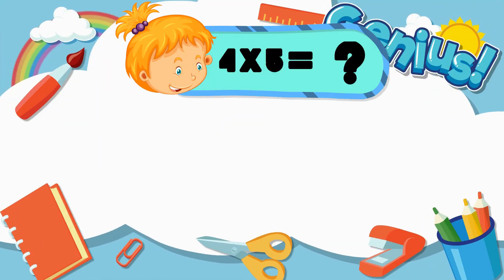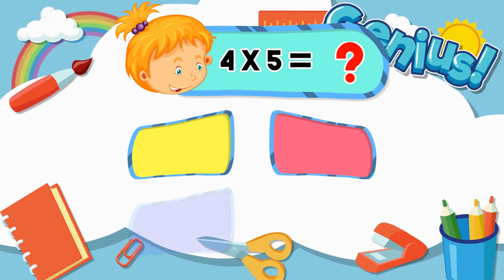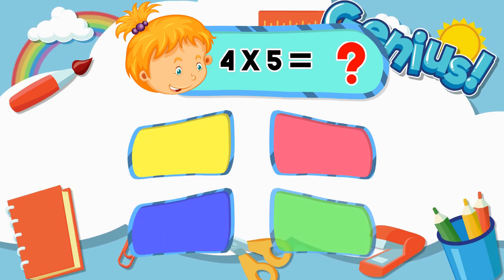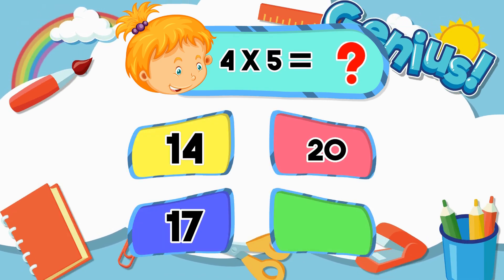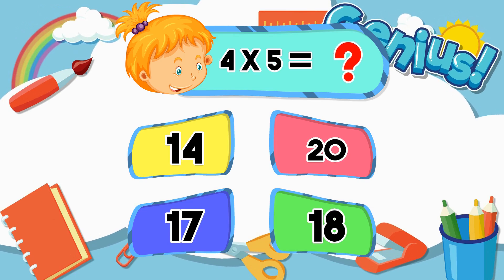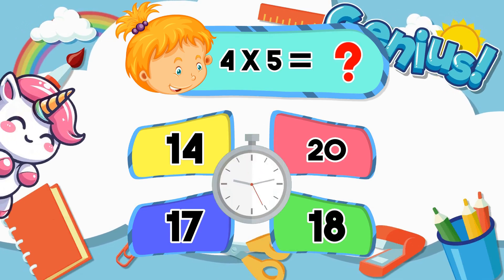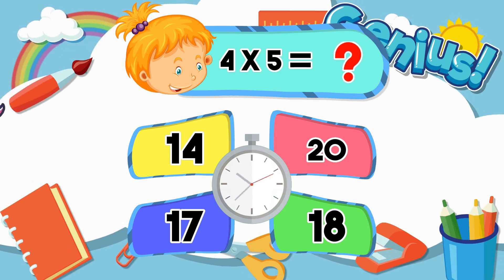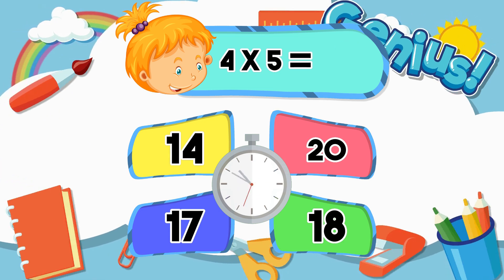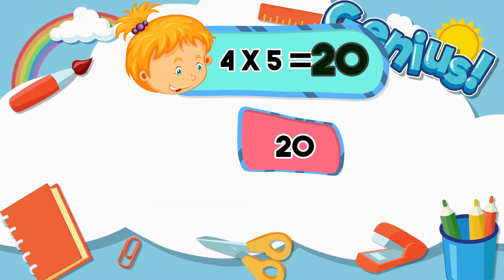What is 4 times 5? Options: 14, 20, 17, 18. Answer: 20.